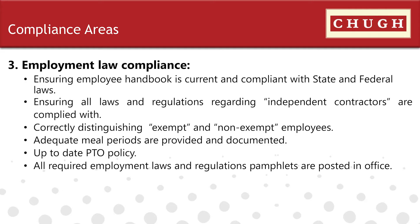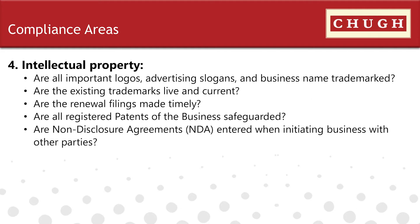Now jumping to intellectual property. It's very important for business owners to protect their intellectual property. First, they should be aware of what intellectual property they hold and identify the kinds of intellectual property. Logos, advertising slogans, and business names should be trademarked. Companies in the music business should copyright their music. Businesses with formulas or designs — like pharmaceutical or motor vehicle companies — can patent them.